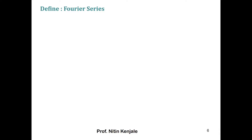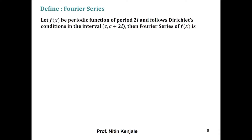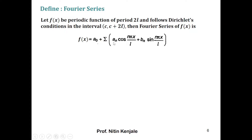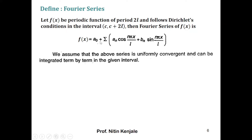We can find the Fourier series of any function that obeys these conditions. Now let us see the formal definition of the Fourier series. Let f(x) be any periodic function of period 2l that follows Dirichlet's conditions in the interval c to c+2l. Then the Fourier series of f(x) is given by f(x) = a₀ + summation of aₙ cos(nπx/l) + bₙ sin(nπx/l), where a₀, aₙ, and bₙ are called the Fourier coefficients. We assume that the series is uniformly convergent and can be integrated term by term.